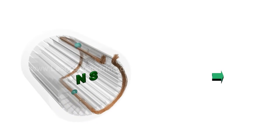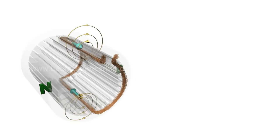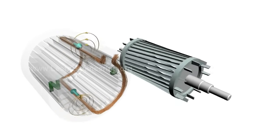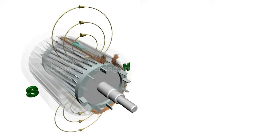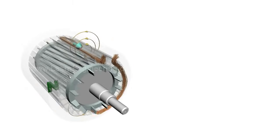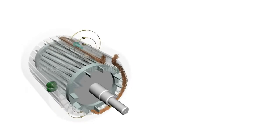Working of a single phase induction motor is simple. Just put one rotor, which is already rotating, inside such a magnetic field. You can note one interesting thing: the rotor will keep on rotating in the same direction.